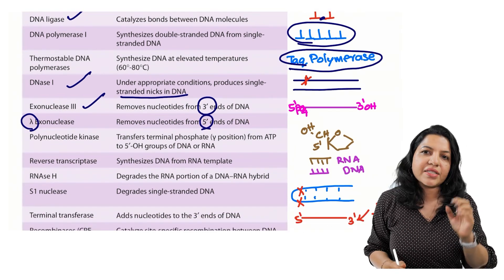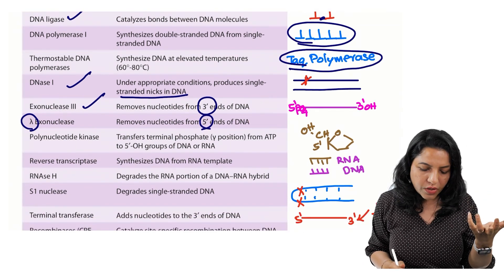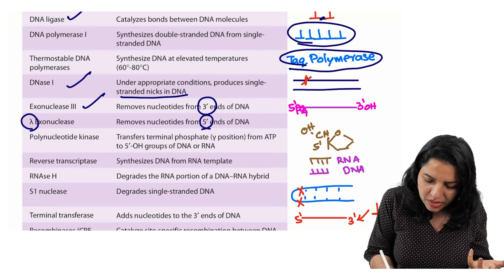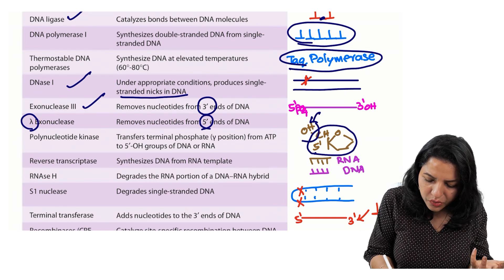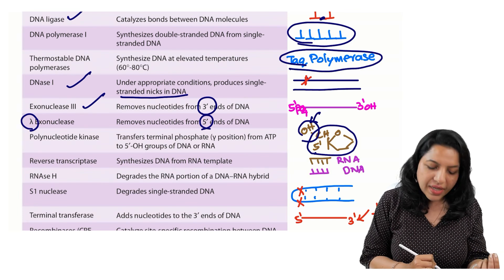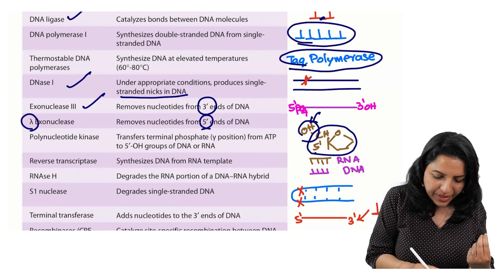Then a kinase. Kinase means always transfer a phosphate group. Something which is transferring, this is the end of a nucleotide. A phosphate group if it is transferred to this 5 prime end, then it is a polynucleotide kinase.